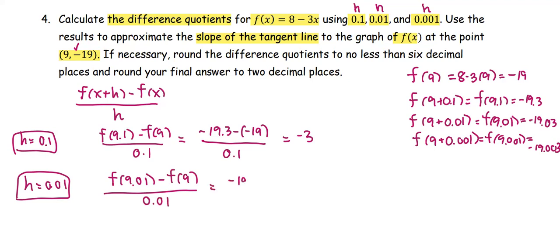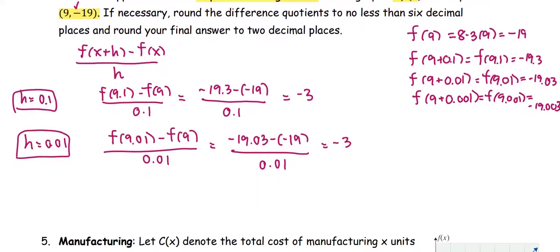For h = 0.01, it's -19.03 - (-19) all divided by 0.01. The answer comes out the same as -3. And the last one,